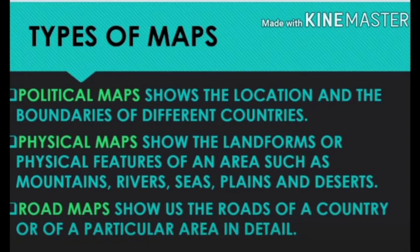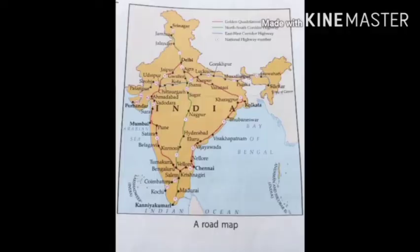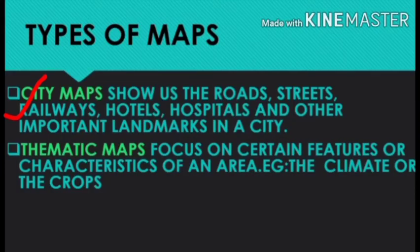The next type of map is a road map. It shows the roads of a country or a particular area in detail. This is a road map of India, showing the details of different highways and other routes in different states in our country.